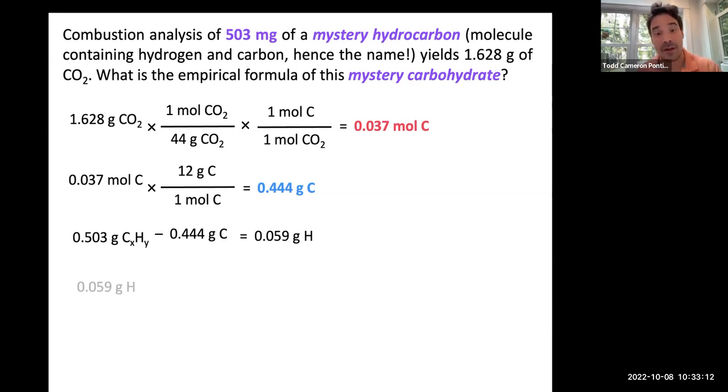If we know the mass of hydrogen, we can find the moles. We're going to take that 0.059 grams of hydrogen. Hydrogen is pretty user-friendly with respect to calculations, it's 1 gram for every 1 mole, which gives us 0.059 mole of hydrogen. We now have our ratio of carbon to hydrogen, 0.037 mole of carbon to 0.059 mole of hydrogen.